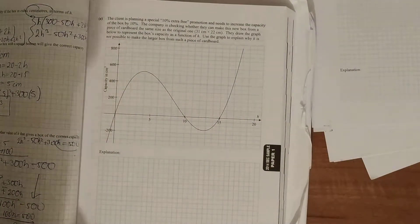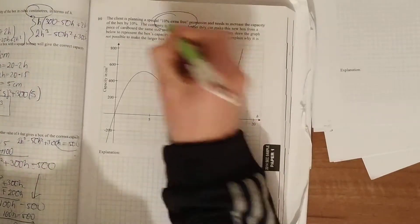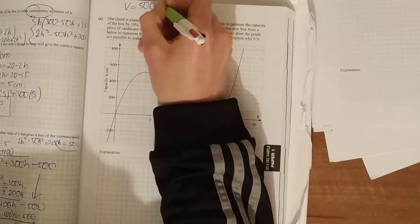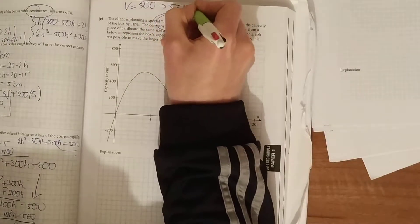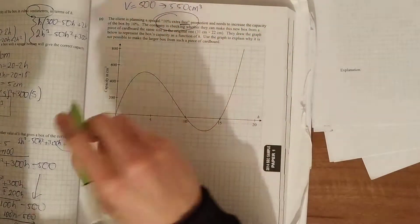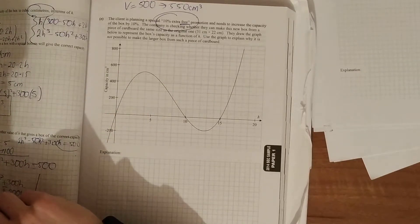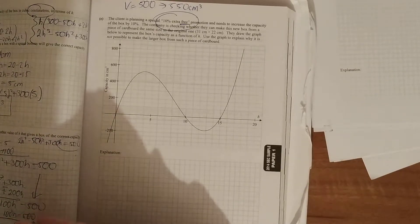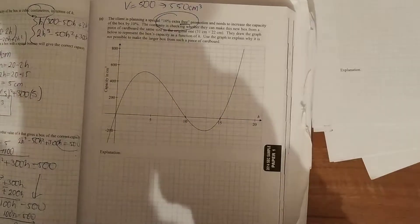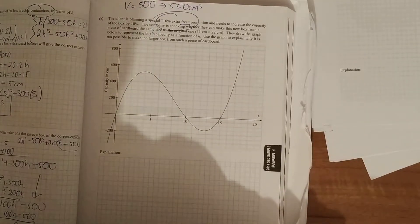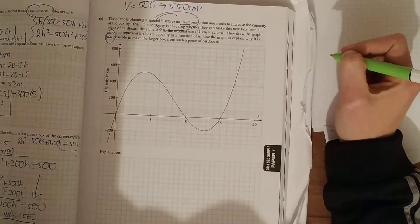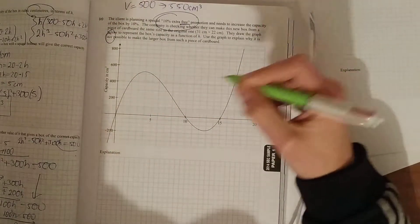And then the last bit of this, the client is planning a special 10% extra free. So instead of your volume being equal to 500, your volume now is equal to 550 centimeters cubed. They need to increase the capacity of the box by 10%. The company is checking whether they can make this new box from a piece of cardboard the same size as the original. They draw the graph which represents the box capacity as a function of the height. Use your graph to explain why it's not possible to make the larger box from a piece of cardboard.